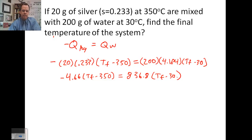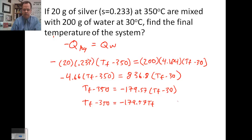And I get T final minus 350 equals negative 179.57, T final minus 30. I need to distribute, so T final minus 350 equals negative 179.57 T final plus 5,387.12.